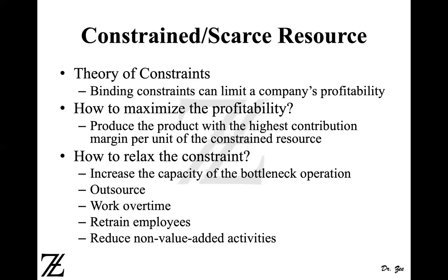Or you can work overtime. If the company is already not working 24 hours — just an eight-hour or twelve-hour shift — they can increase the time and satisfy some additional demands. Or they can retrain employees, provide them training, and make them more efficient. So instead of producing 100,000 units a day, they can now produce 120,000 a day. Retraining and improving efficiency can also help satisfy excess demand.